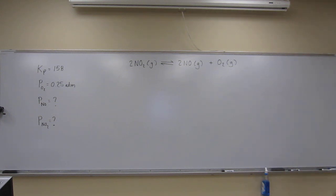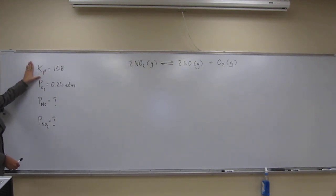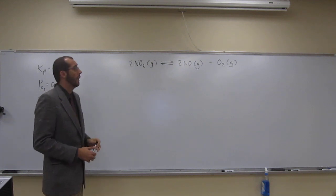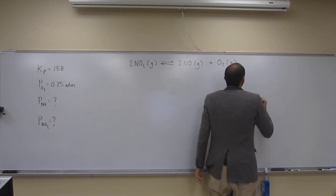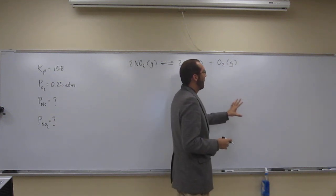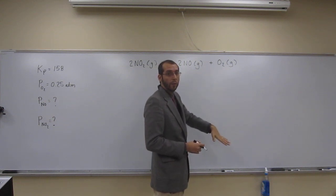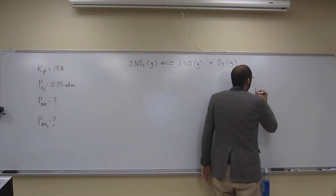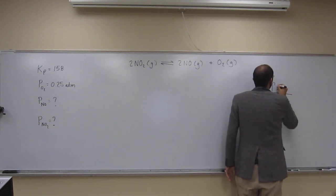Remember the problem gave us Kp here but probably the best thing for us to do to begin is to write the Kp expression. So let's do that. If you guys recall when we're writing Kp it's going to be the partial pressures of the product divided by the partial pressures of the reactants raised to their coefficients. So let's just write that out. I would say you guys should write this out while I'm doing it just to make sure you get the same answer as me.